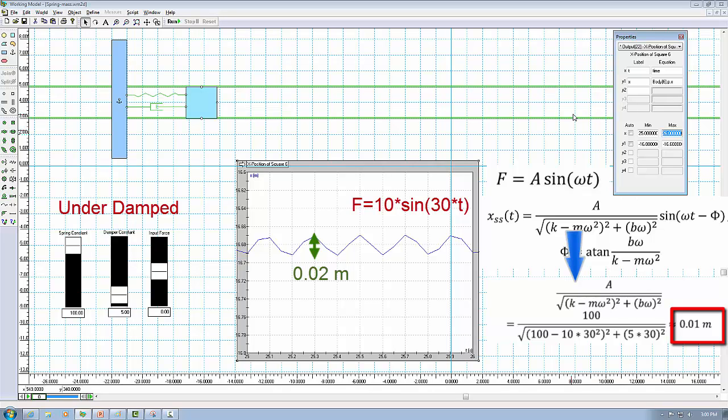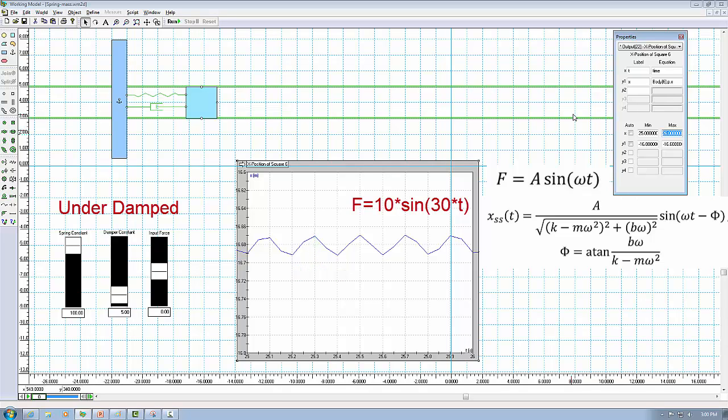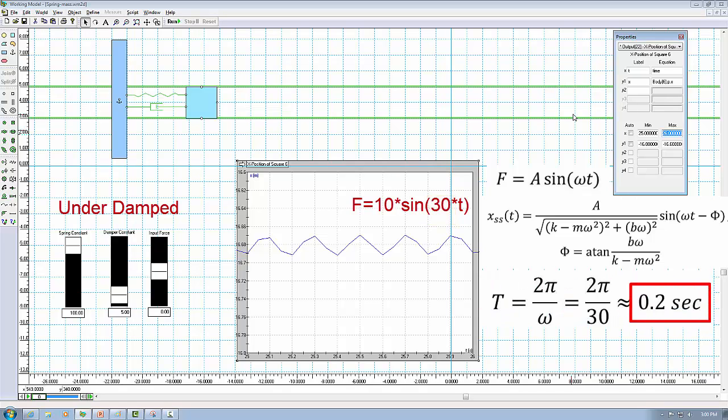This is correct because the one we calculated is the amplitude measured from equilibrium position. Since we can't find the equilibrium position from the figure, we measure the peak to valley value. The frequency at steady state should be equal to frequency of the input, which is 30 rad per second, or a period of 0.2 seconds. And from the peak to peak time period, this is about 0.2 seconds.